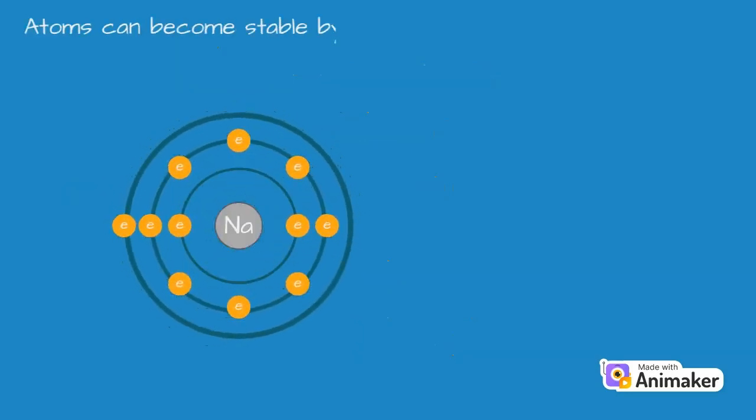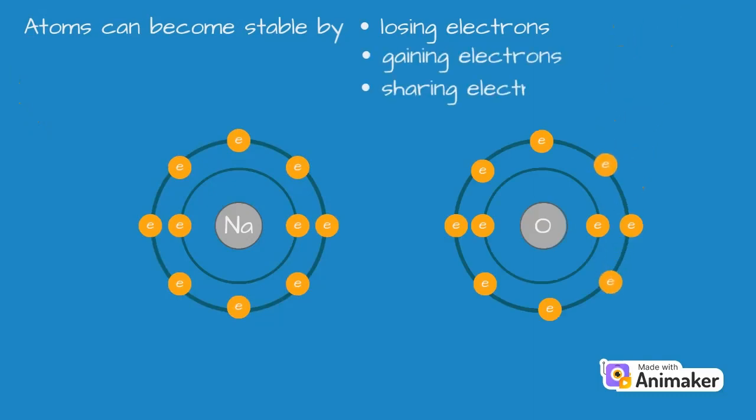So, atoms can become stable by either losing electrons, or by gaining electrons, or by sharing electrons, which we will cover in a separate video. This concept is characterized by the term valency. Valency of an atom is defined by the number of electrons an atom needs to lose, or gain, or share to become stable.